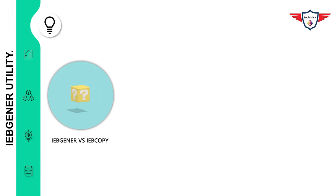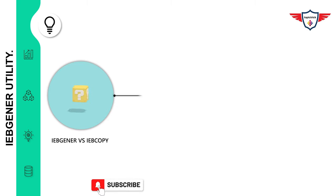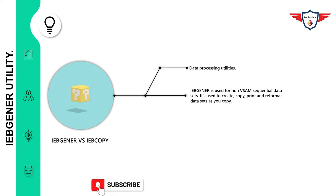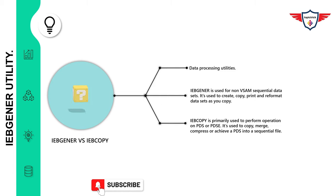Coming back to our original question: what is the basic difference between IBGener and IEBcopy? Both utilities are used for data processing. IBGener utility is used for non-VSAM sequential datasets — it is used to copy, create, print, or reformat a dataset as you copy. On the other hand, IEBcopy is primarily used to perform operations on partitioned datasets or PDSE. It is used to copy, merge, compress, or archive a PDS into a sequential file.